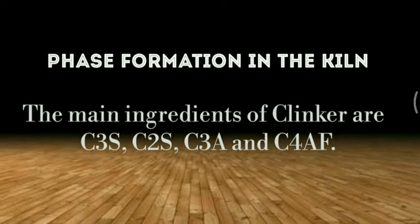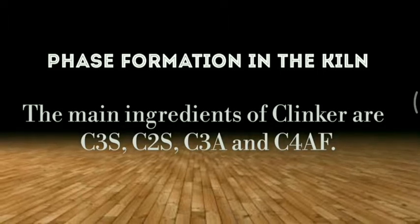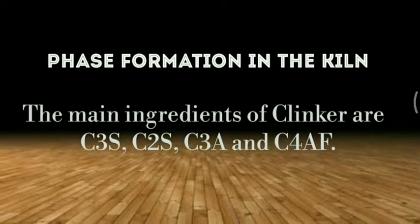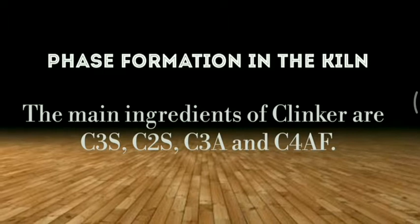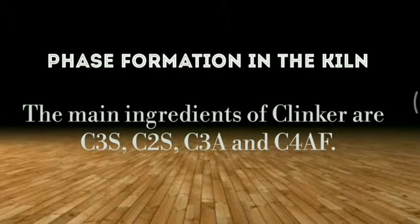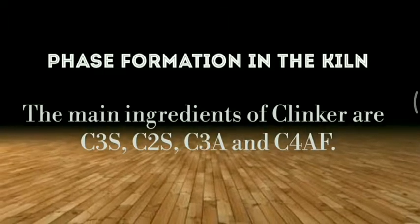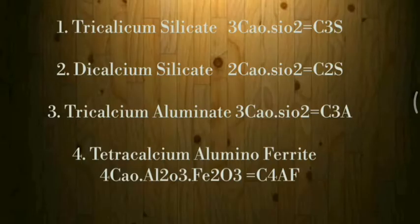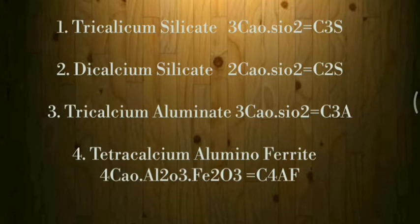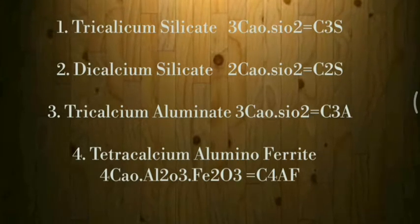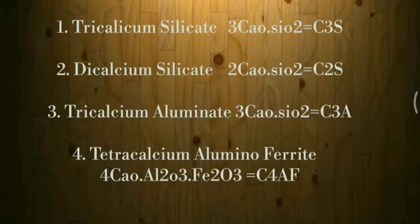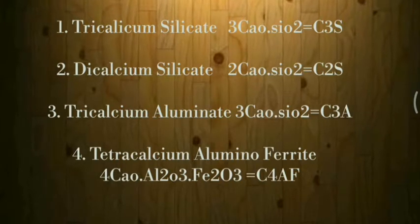Phase formation in the kiln: the main ingredients of clinker are C3S, C2S, C3A, and C4AF — that is Tri-Calcium Silicate C3S, Di-Calcium Silicate C2S, Tri-Calcium Aluminate C3A, and Tetra-Calcium Alumino Ferrite C4AF.